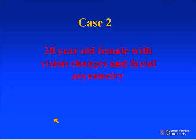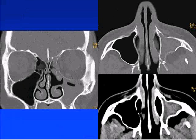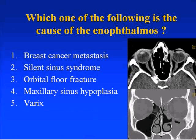The second case is a 38-year-old female with vision changes and facial asymmetry. Here is a CT through the orbital region, with additional images in both bone windows and soft tissue windows through the facial region. Which of the following is the cause of this patient's enophthalmos? Number one, breast cancer metastasis; number two, silent sinus syndrome; number three, orbital floor fracture; number four, maxillary sinus hypoplasia; or number five, orbital varices.